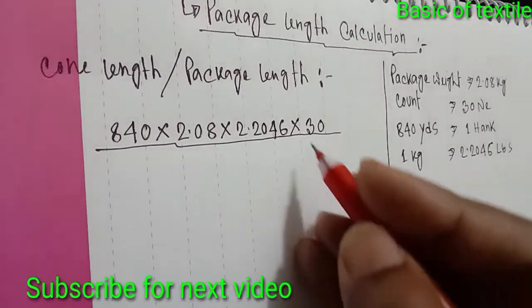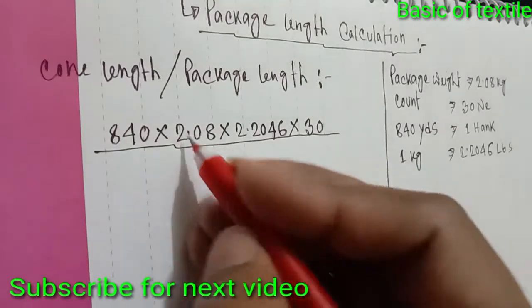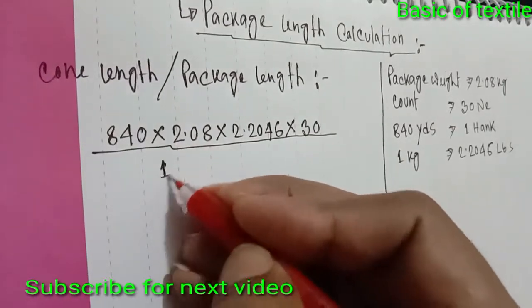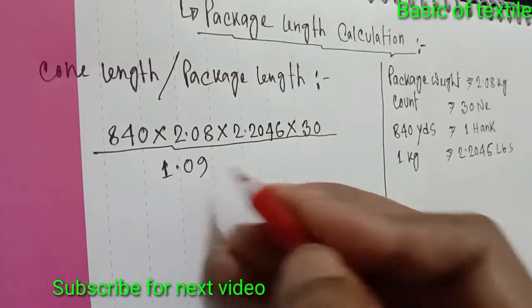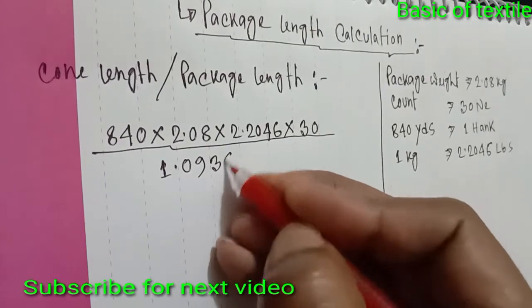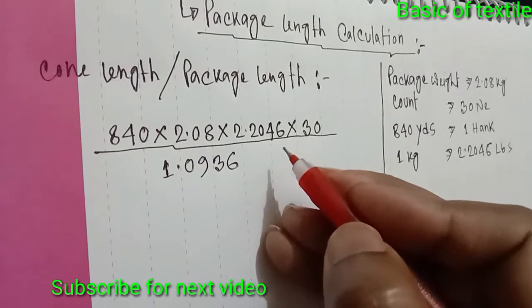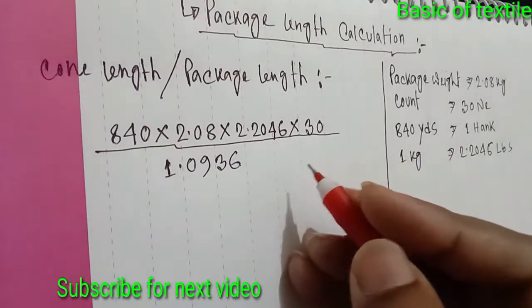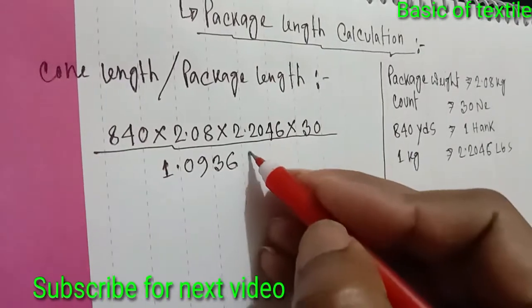Next, result: one point zero nine three six. The package length available is 1.0936.